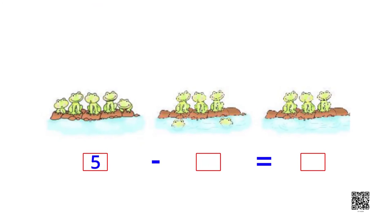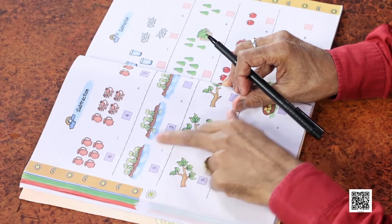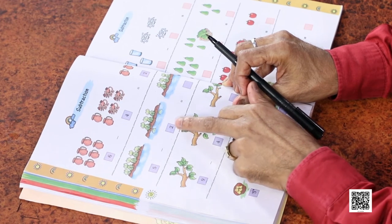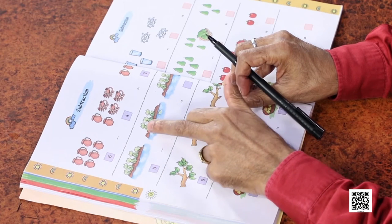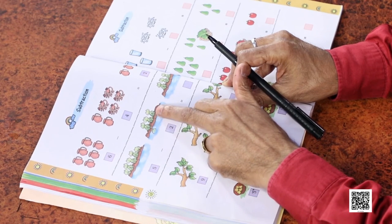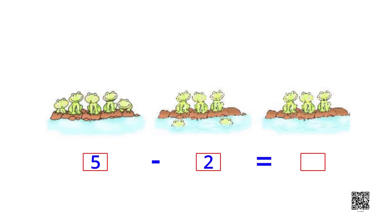Try to tell me what will be 5 minus 2. There are 5 frogs — 1, 2, 3, 4, 5. Minus 2 means 2 have gone to the pond. How many are left? 1, 2, 3. So we can write: 5 minus 2 is equal to 3.